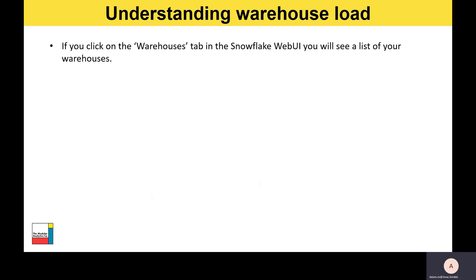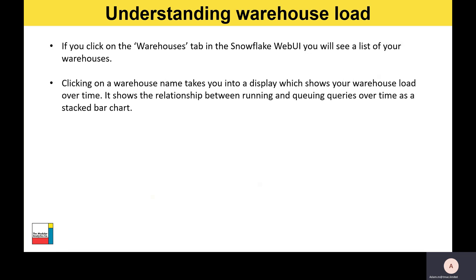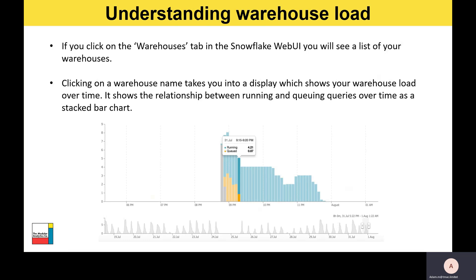If you click on the Warehouses tab in the Snowflake web UI, you'll see a list of all your warehouses. Clicking on one drills into a display showing your warehouse load over time — it shows the relationship between running and queuing queries as a stacked bar chart. Running queries are shown in blue and queuing queries are shown in orange over a time range. There's also a slider at the bottom of the pane that you can move to drill into specific areas where you may have been experiencing a problem.